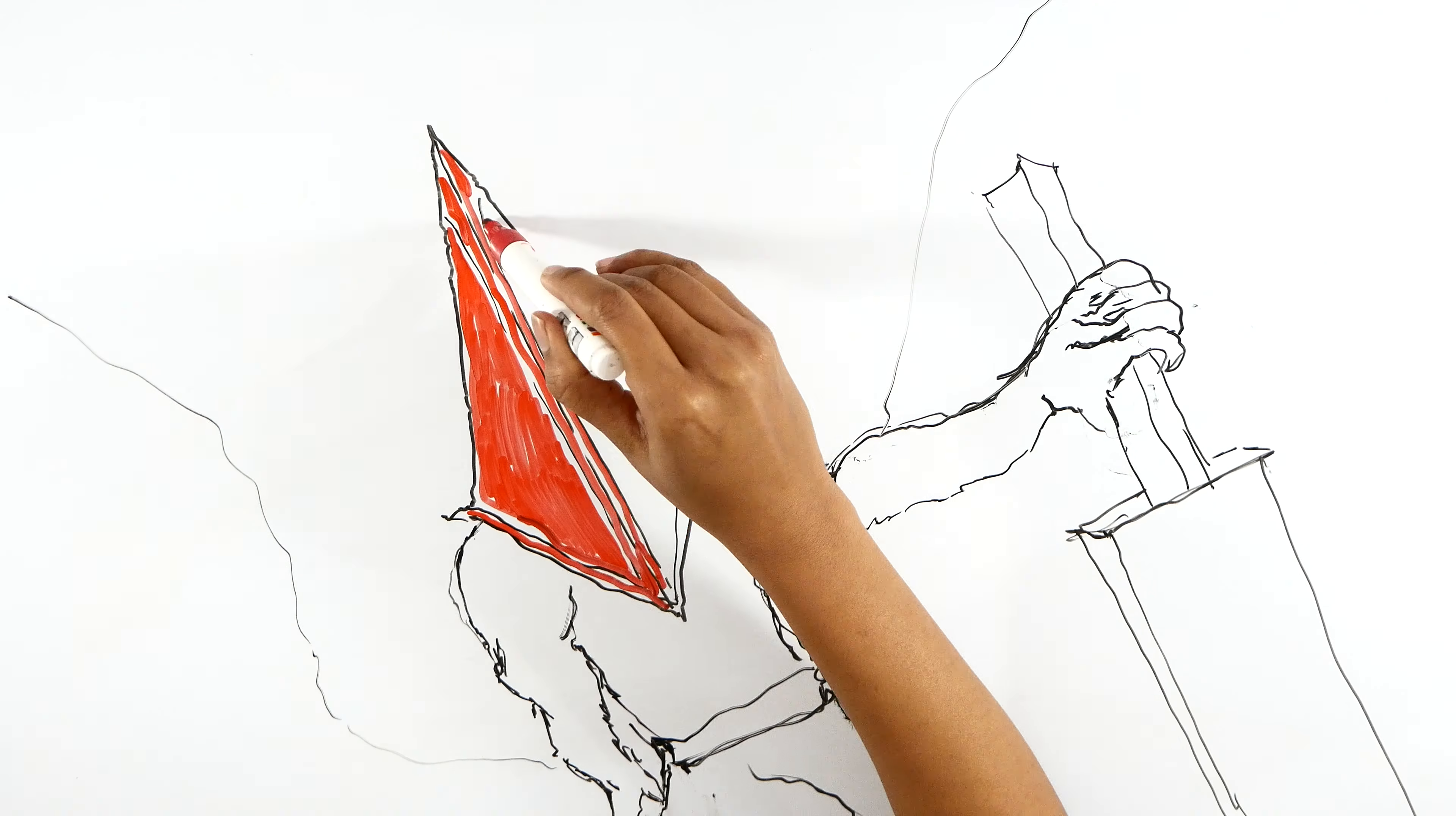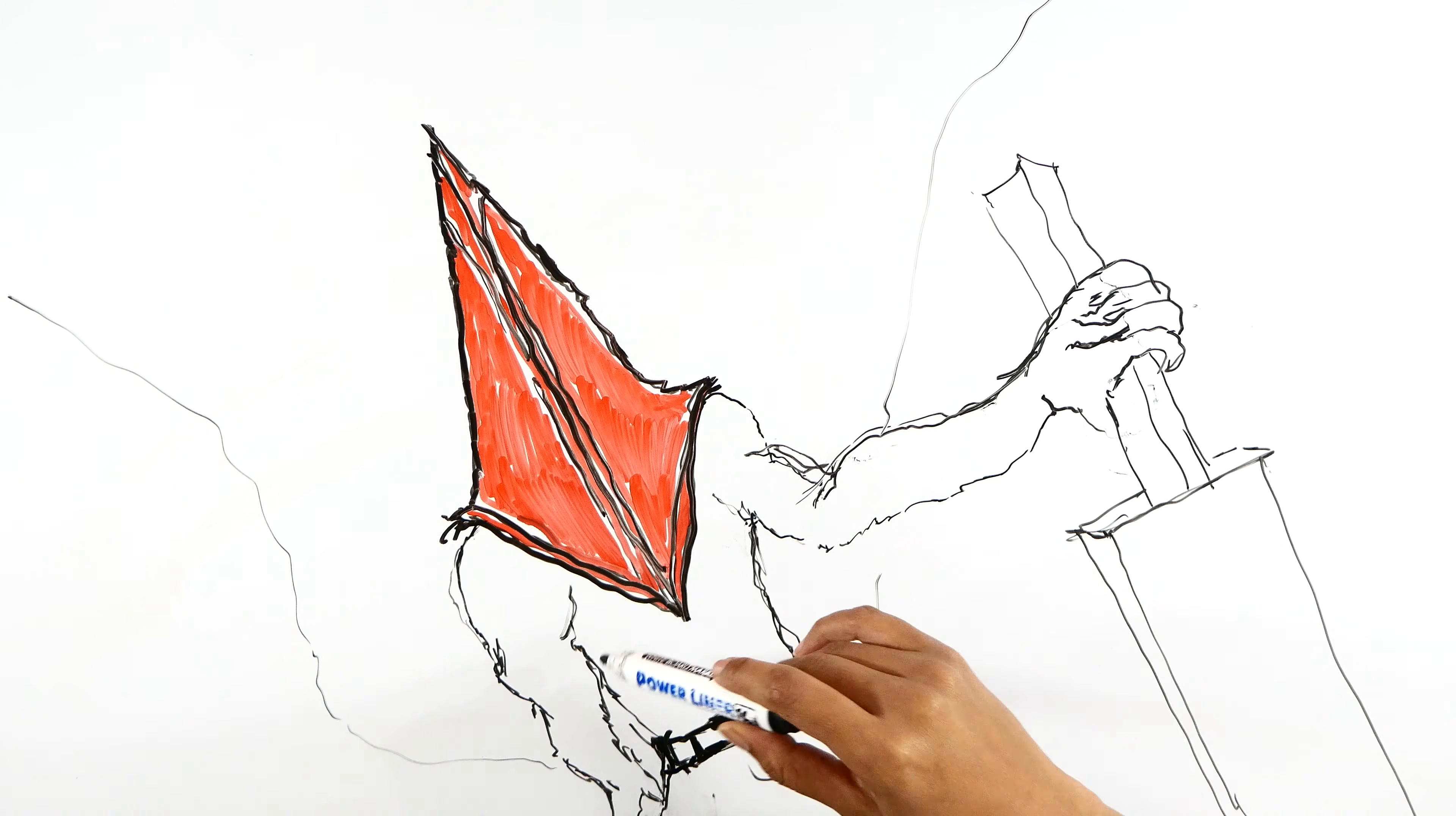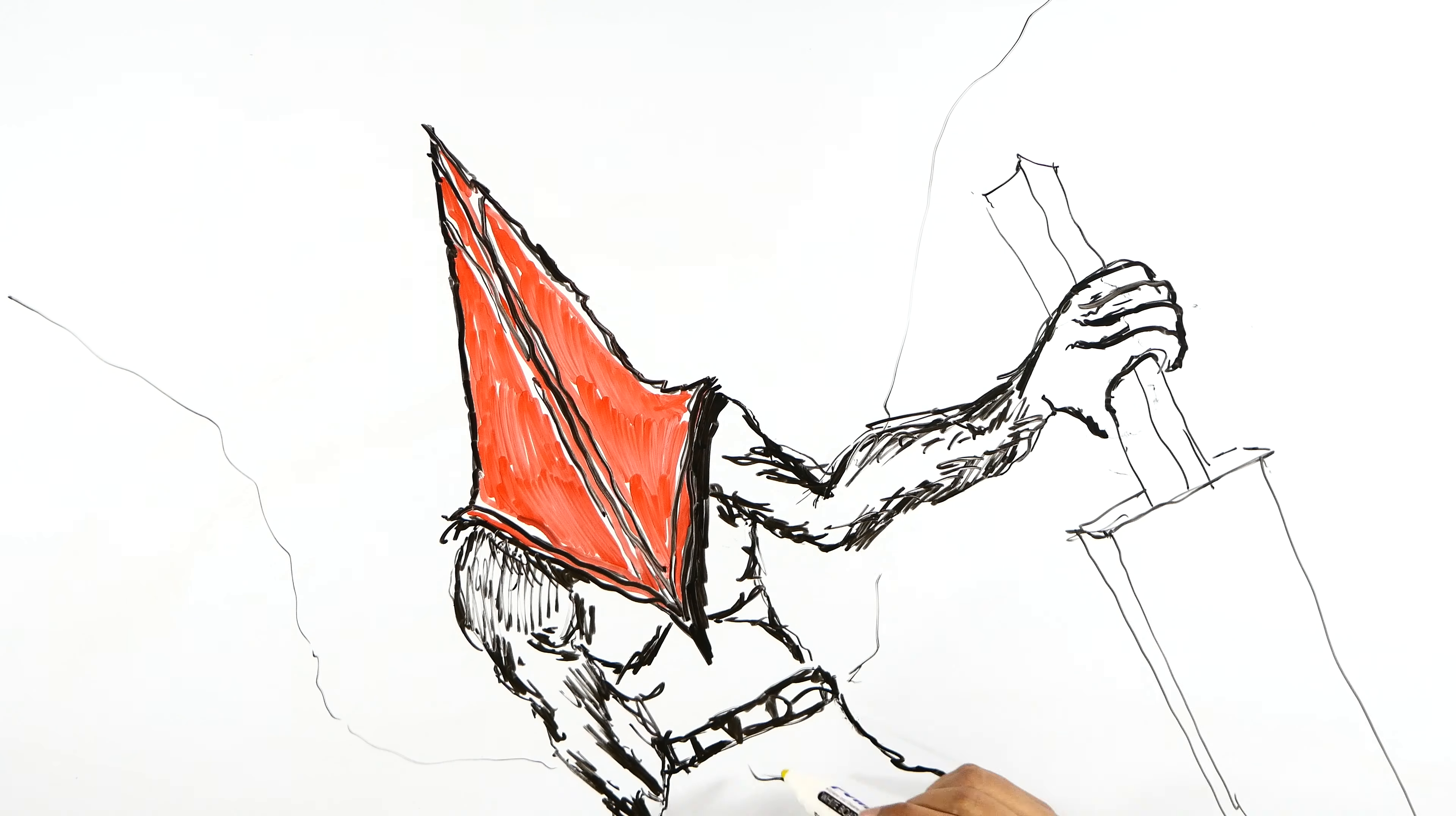So, Pyramid Head is basically the demon face of all of us. He represents the darkness we all have inside us. If we don't kill our darkness, that will kill us.